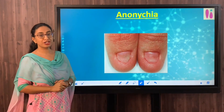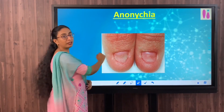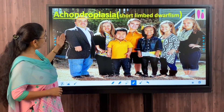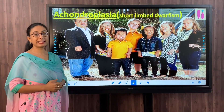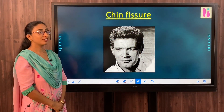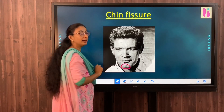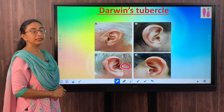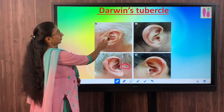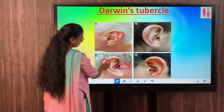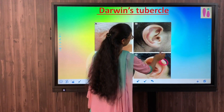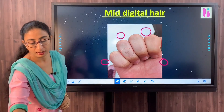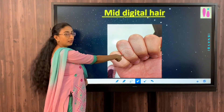This is again a Mendelian character. It is called Anonychia — the absence of nails in the fingers. Achondroplasia means short-limbed dwarfism; here you can see all these people having very short hands and very short legs — this is also a Mendelian character. Chin fissure: this groove in the chin region is called chin fissure, and is also a Mendelian trait. Darwin's tubercle: the thickening of the ear pinna is called Darwin's tubercle — this also follows monogenic inheritance. The next one is mid-digital hair, which is also a Mendelian trait.